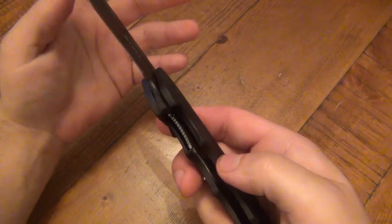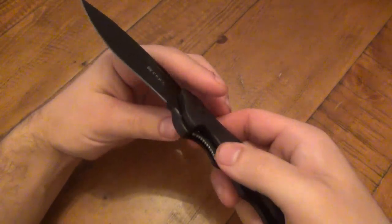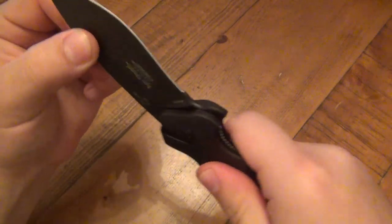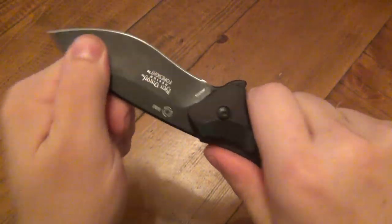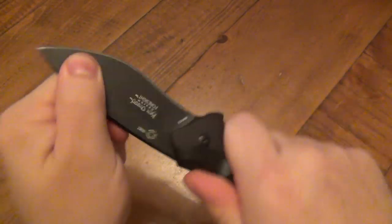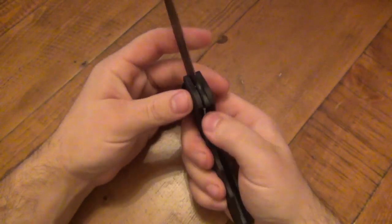The lockup, it's a liner lock. Liner locks are very tricky, sometimes they're hit and miss. With this one, even with a lot of use, it locks up like a bank vault. There's nothing. There's no side to side, there's no up and down. You can sit here and do hand dances all day long and you're not going to get any wiggle out of it. It's phenomenal.